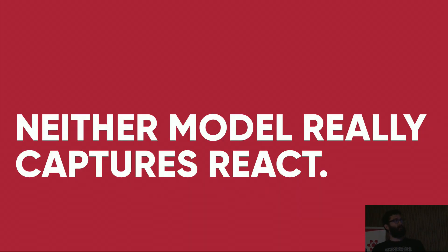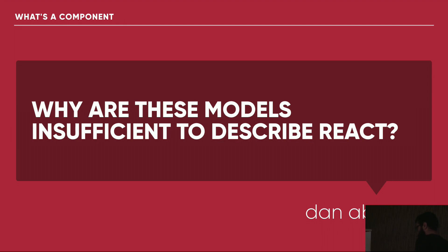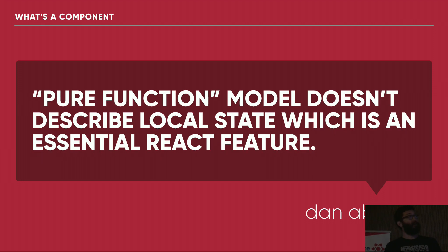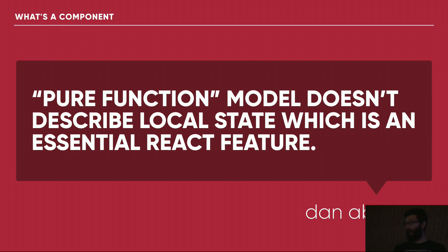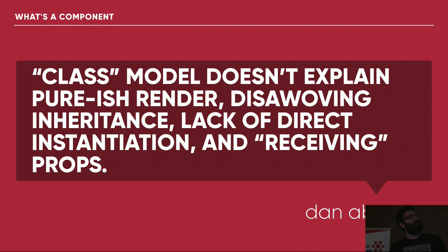The thing is, neither of those models fully captures React. So why are these models insufficient? Well, the pure function model doesn't describe local state — if you need local state right now, you use classes. But classes don't really explain the pure-ish render. That's why you end up writing in a way that leads to hierarchical stabilization issues with props. Classes themselves are not ideal for representing what a component is.